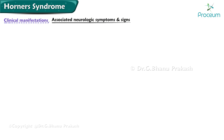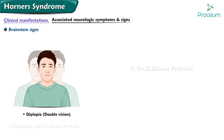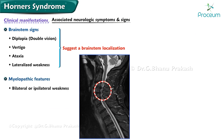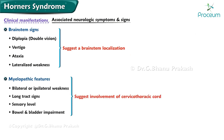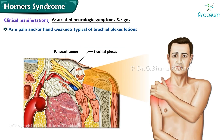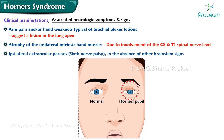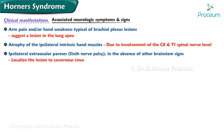Associated neurologic symptoms and signs can be useful in localizing the origin of Horner syndrome. Brainstem signs — diplopia, vertigo, ataxia, lateralized weakness — suggest a brainstem localization. Myelopathic features — bilateral or ipsilateral weakness, long tract signs, sensory level, bowel and bladder impairment — suggest involvement of the cervical or thoracic cord. Arm pain and/or hand weakness typical of brachial plexus lesions suggest a lesion in the lung apex, with atrophy of the ipsilateral intrinsic hand muscles due to involvement of C8 and T1. Ipsilateral extraocular paresis, particularly a sixth nerve palsy in the absence of other brainstem signs, localizes the lesion to the cavernous sinus.